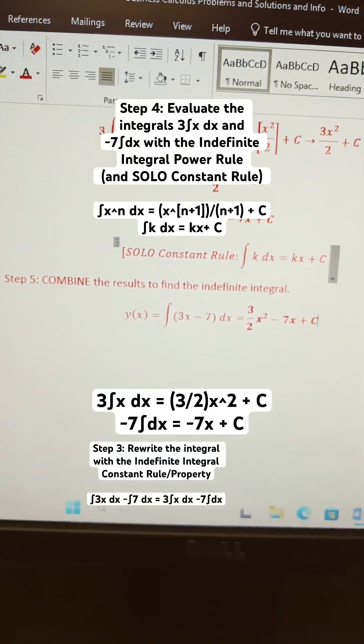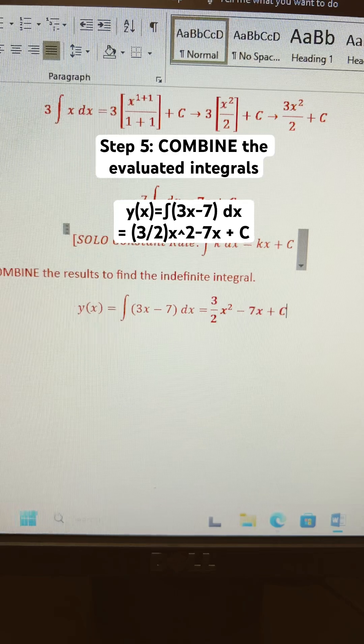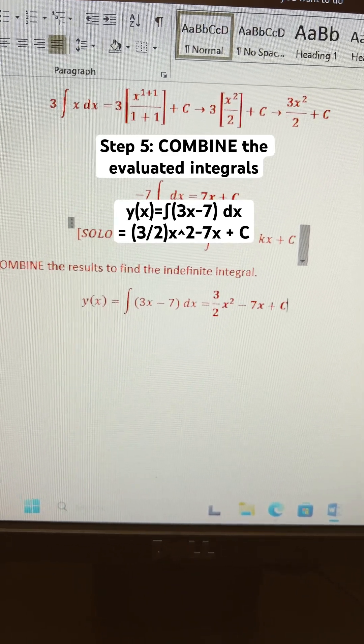Step 5 is to combine the results. That's going to give you (3/2)x² minus 7x plus C.